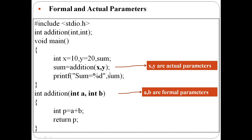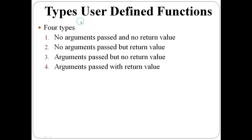At the time of the function call, x and y are passed to the function. So x and y are called actual parameters or actual arguments. When control transfers from the function call to the function definition, the variables a and b receive the values of x and y. Here a and b are called formal parameters or formal arguments. There are mainly four types of user-defined functions based on whether arguments and return values exist.